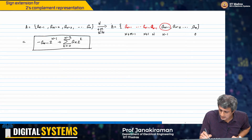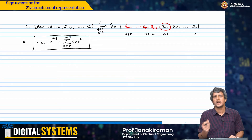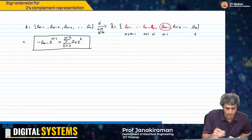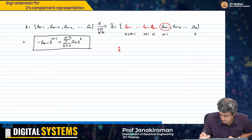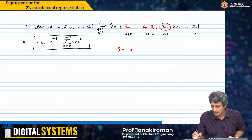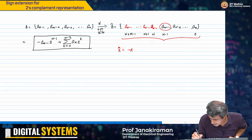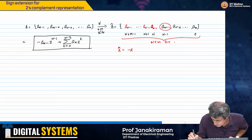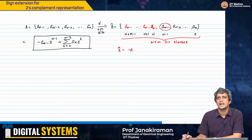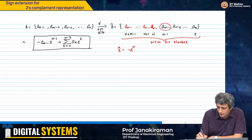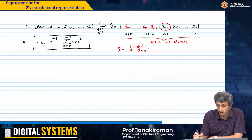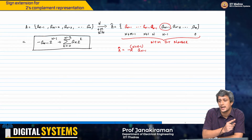What is the new value of this number? Let me call this A_hat, because it is a different number. I need to show that A_hat and A are the same. The value of A_hat — I will do this in red — A_hat equals minus 2 power n plus m minus 1 into A_(n-1), because that same A_(n-1) has been repeated m times.